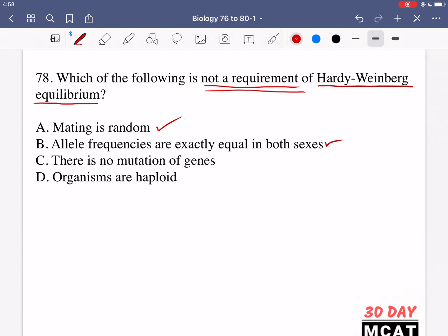Option C is saying there is no mutation of genes. Yes, this equilibrium requires there to be no mutations in this population so that we can just look at the alleles that are present and then begin to discuss those alleles without worrying about mutation. We do these things to make our calculation simpler.